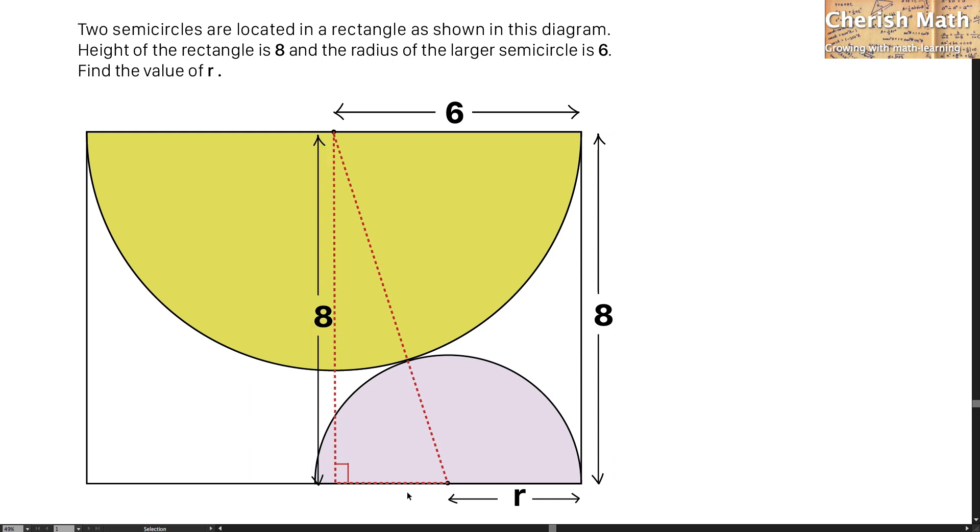And now, for this part, that is going to be 6 minus r, while for the hypotenuse of this triangle, that is going to be r plus 6.